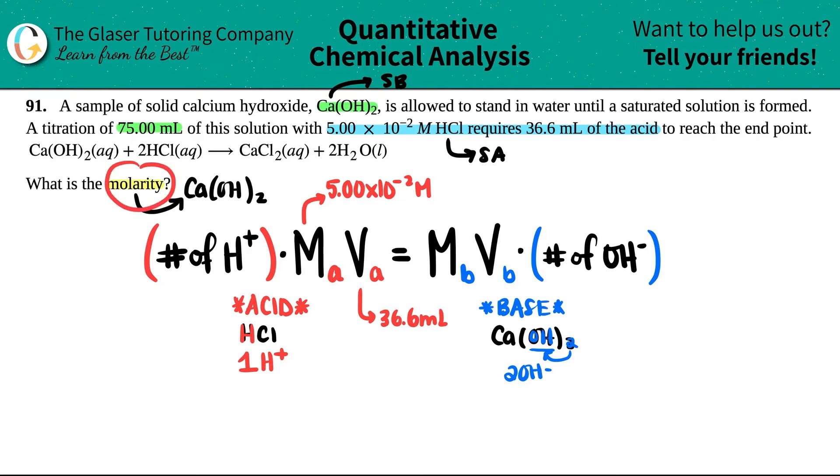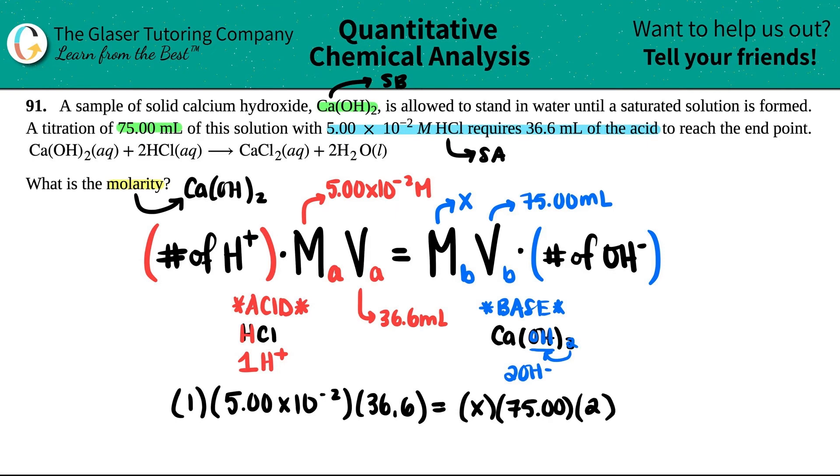Now the question is asking for the molarity of the base. So I don't know what this is, but they said that we're going to titrate with 75 mL of this solution, which is basically the calcium hydroxide, right? So 75. We have everything accounted for. We have one variable. So let's just plug in the numbers. I'm just going to go from left to right.